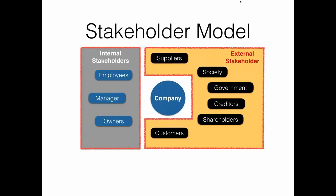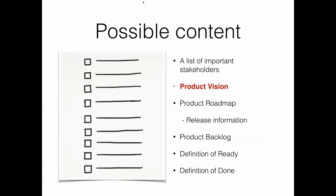A stakeholder model may be beneficial for a product owner. Next on the list is product vision — I expect every product owner working according to Scrum to have one. The product owner is responsible for putting together and communicating a product vision. The product vision should give direction and focus, guide the development team, and help the team stay focused on what is important to get a great product out.